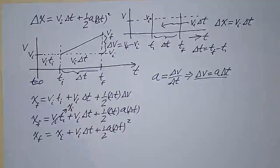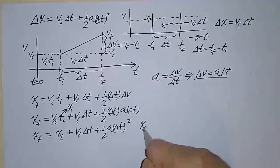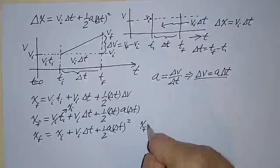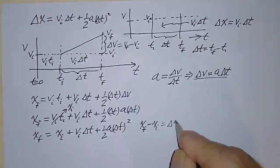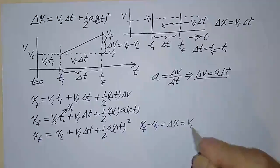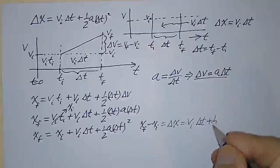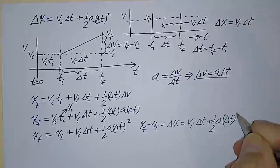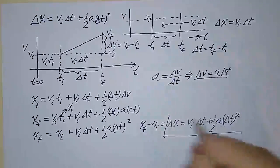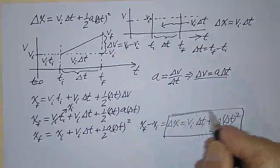That's what x final is. Moving x initial to the other side, x final minus x initial equals delta x, and that equals v initial times delta t plus one-half a times delta t squared. Although I'm running out of ink here, that is what I intended to show you.